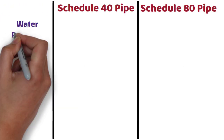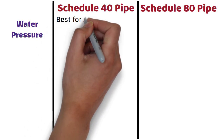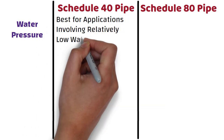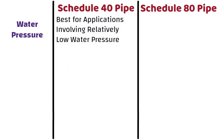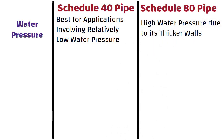Water pressure: Schedule 40 pipe has thinner walls, so it is best for applications involving relatively low water pressure. Schedule 80 pipe is more likely to perform better in high water pressure situations due to its thicker walls.